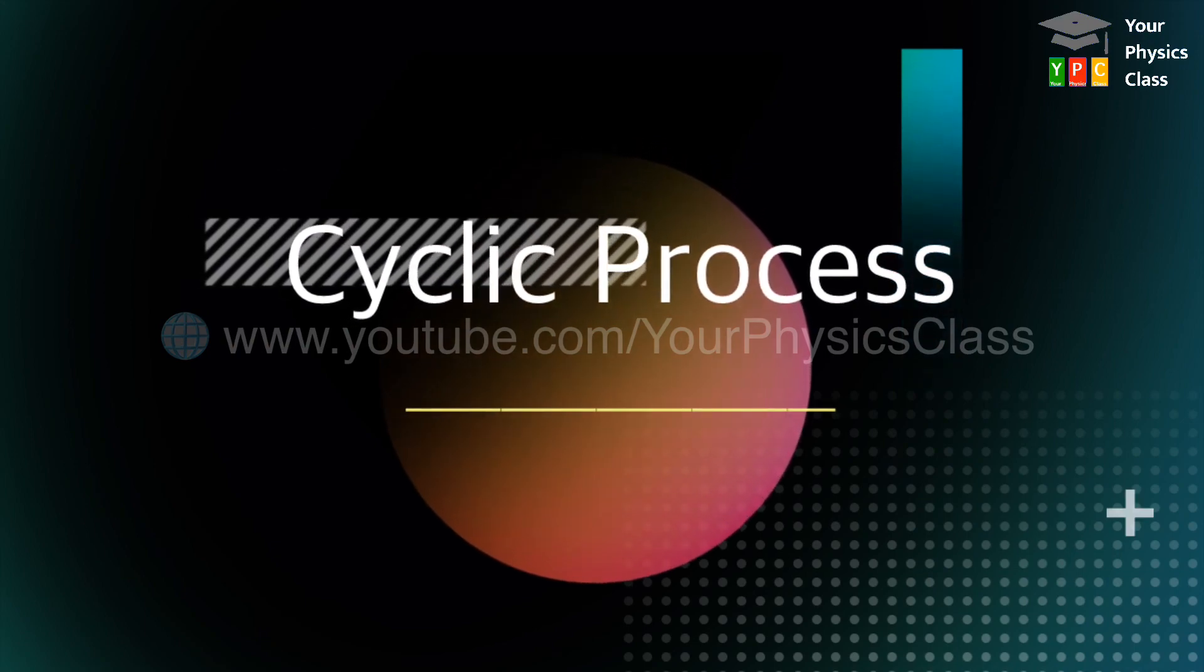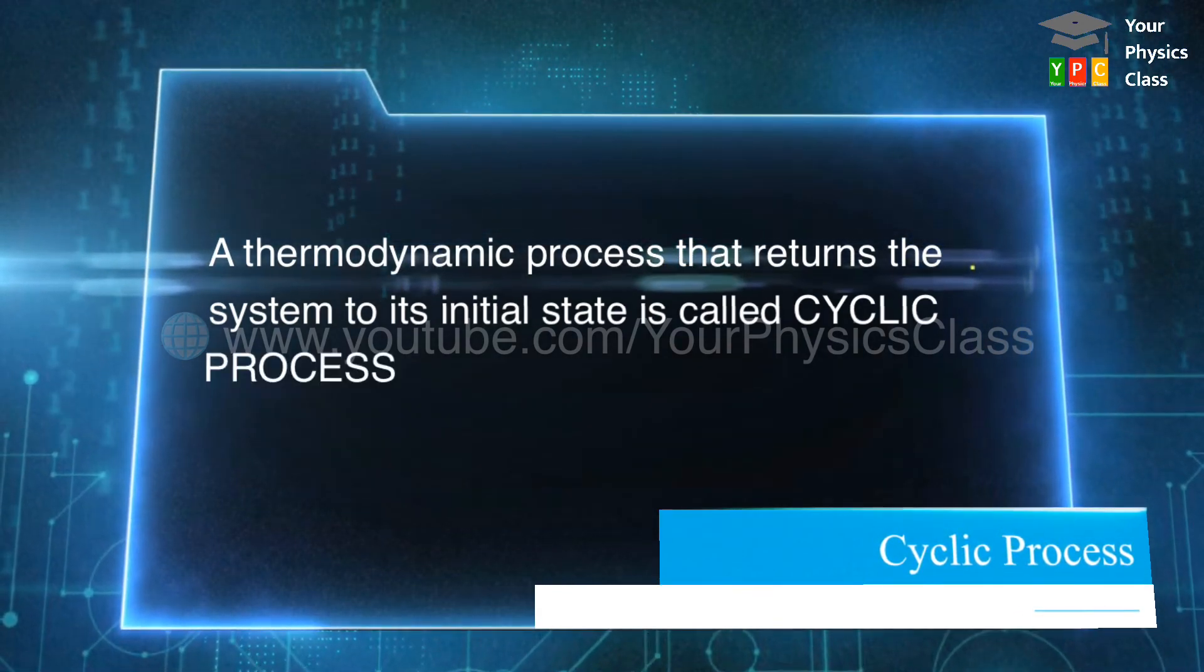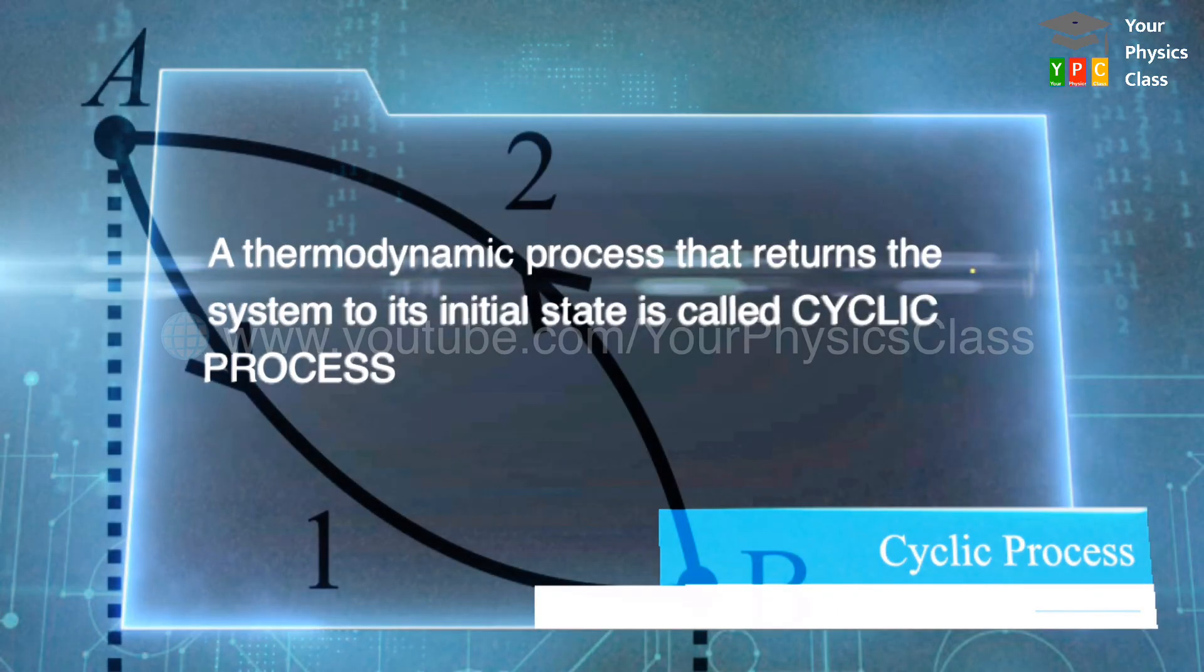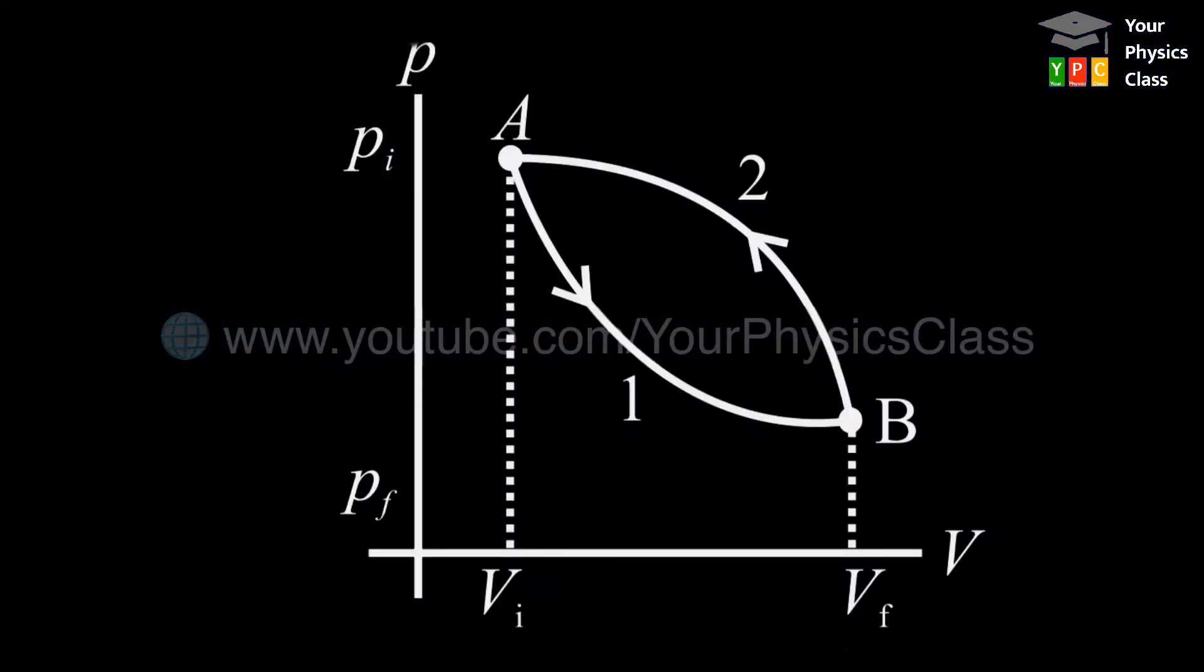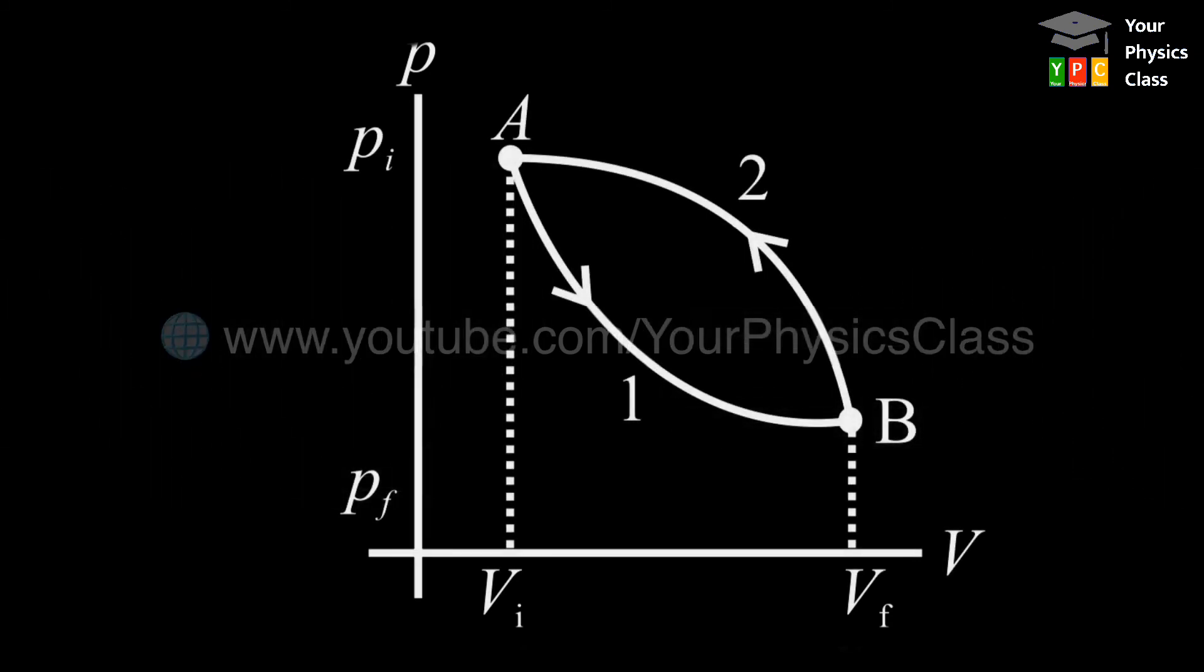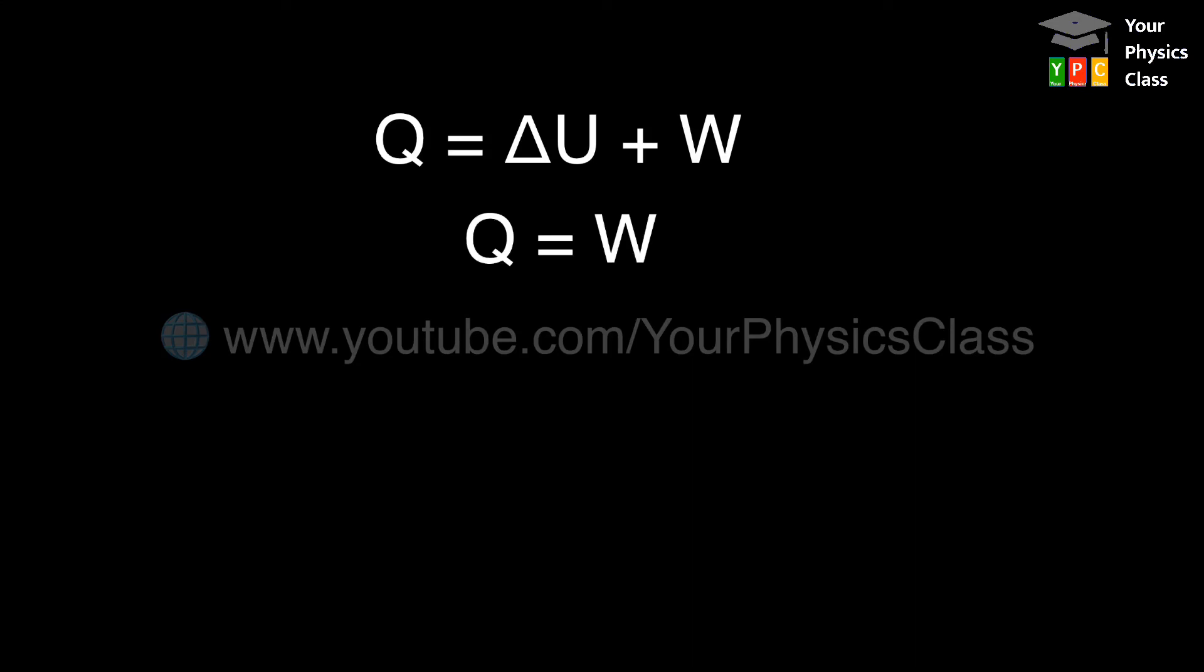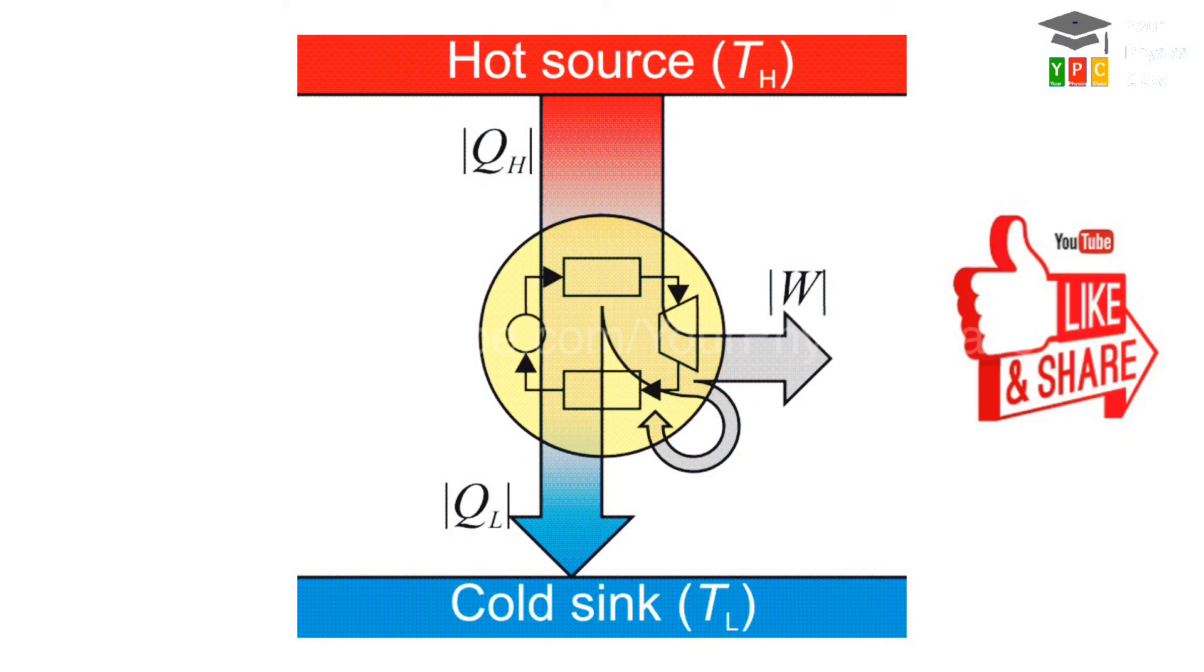The next process is cyclic process. A thermodynamic process that returns a system to its initial state is called cyclic process. In this process, initial and final state of system are the same. The figure shows PV diagram for cyclic process. From the figure, it is clear that the heat supplied is equal to work done, since the change in internal energy is zero. In this system, internal energy does not change. Therefore, according to first law of thermodynamics, Q equals W, where change in internal energy in cyclic process is zero. Working of all heat engines is a cyclic process.